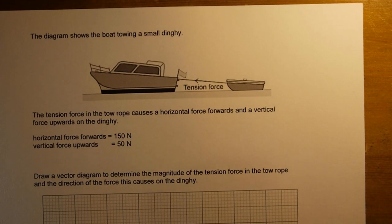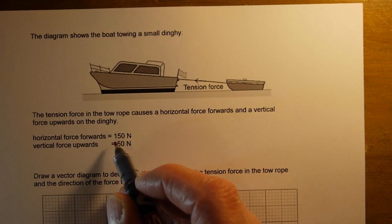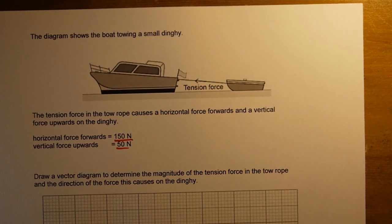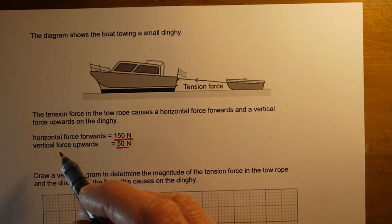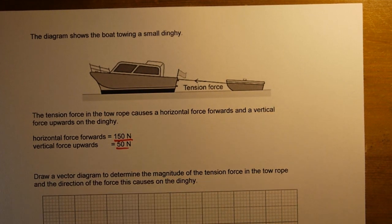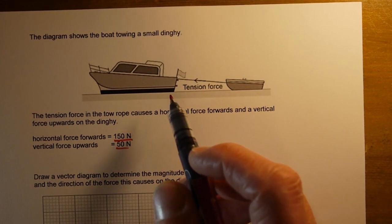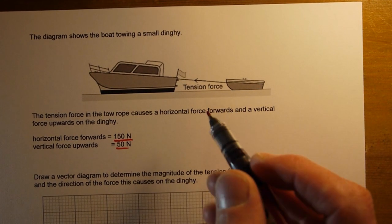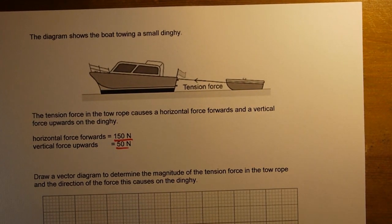We're going to look at how we can combine two components of a force to find the resultant of those two components. In this question we've been given a horizontal force and a vertical force. We have a situation where a boat is pulling a smaller dinghy behind it, and we're being asked to find out the tension in the rope that's pulling that small dinghy.